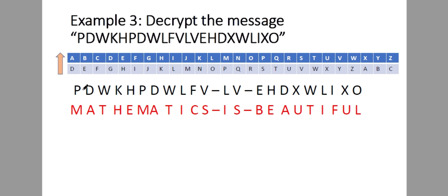Since this is decryption, we look at the bottom letters first. P is M, D is A, W is T, K is H, H is E, P is M, D is A, W is T, L is I, F is C, V is S. Therefore we get 'mathematics'. The next one: L is I, V is S — giving us 'is'. Then E is B, E is B, H is E, D is A, X is U, W is T, L is I — spelling out the next word.